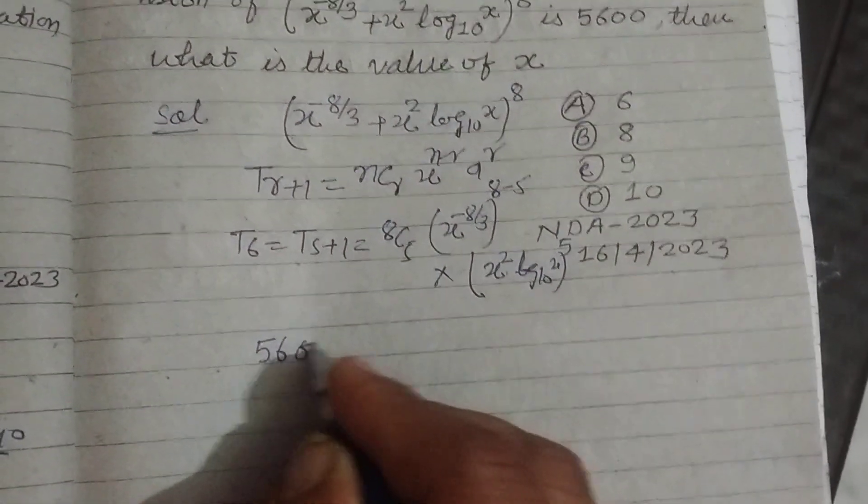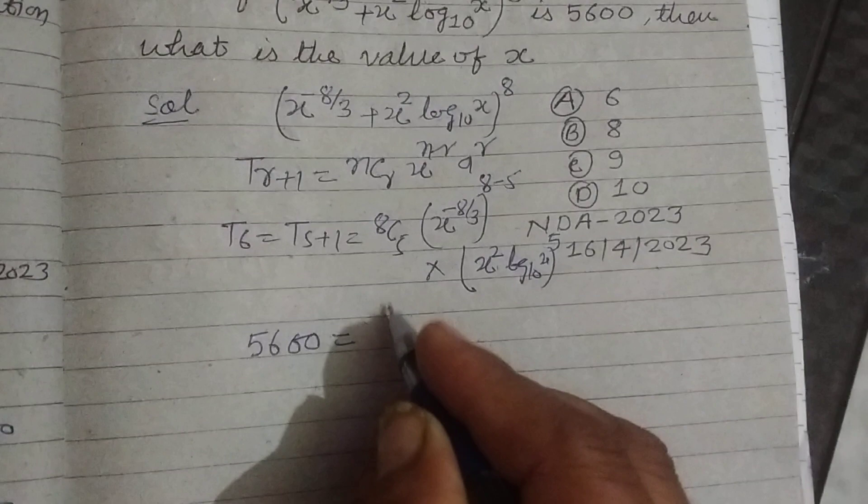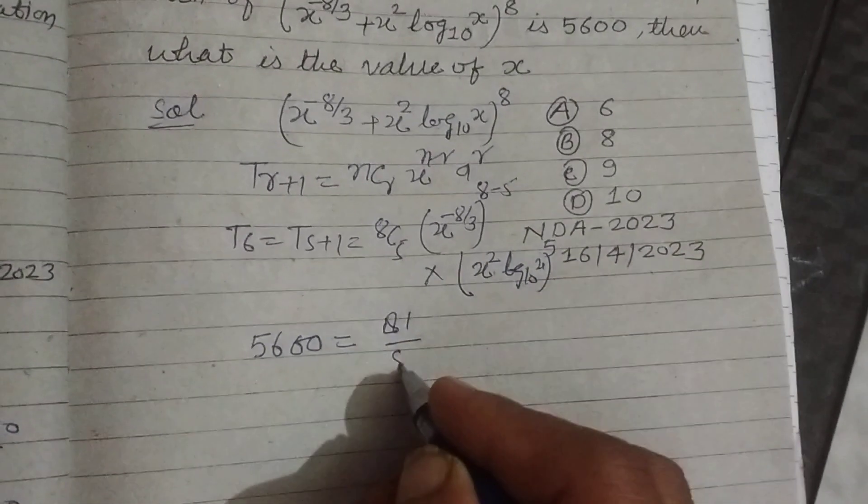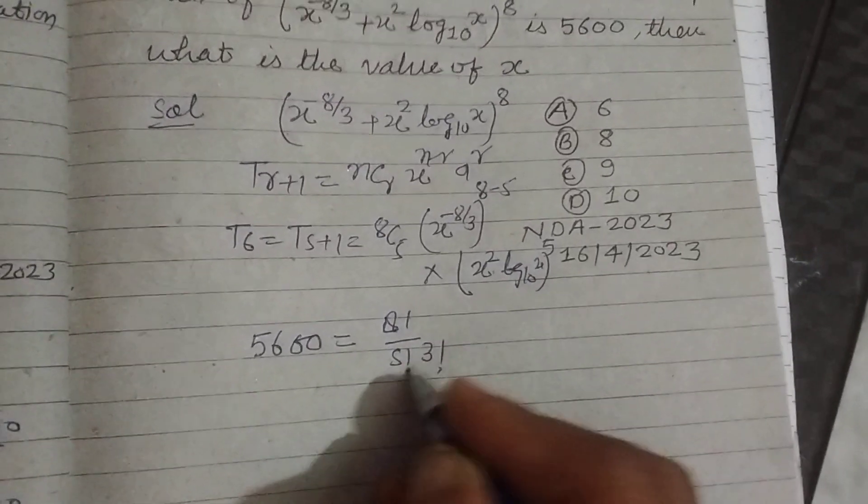And it is given to us as 5600. 8C5 equals 8 factorial divided by 5 factorial times 3 factorial.